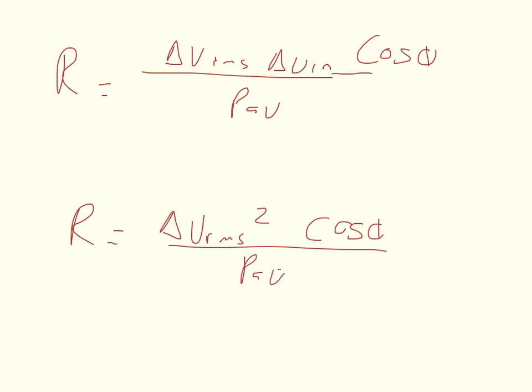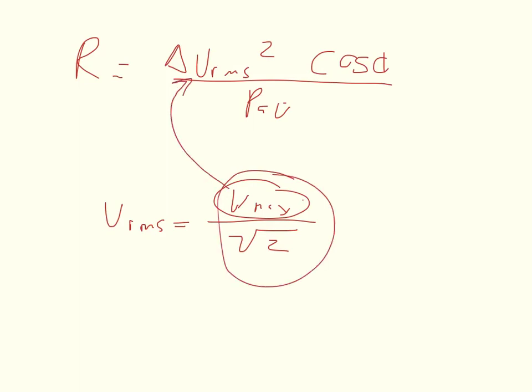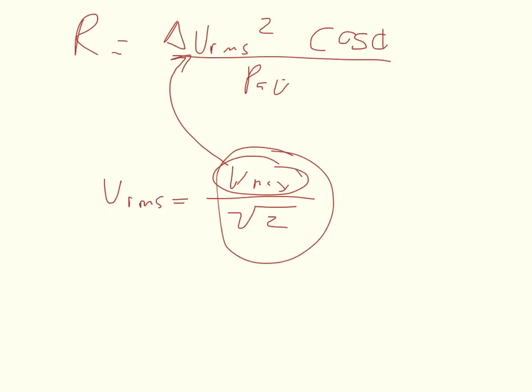In our problem it gives us the maximum voltage instead of the rms voltage, so we gotta convert. The voltage rms equals the max voltage divided by the square root of two. If we plug this in for the rms voltage, then we should be able to solve.